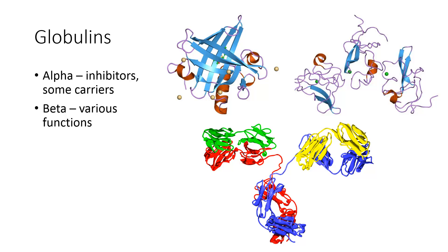The beta globulins are a large family of globulin proteins that carry out various functions. Some examples include plasminogen, which is an enzyme that breaks up blood clots; sex hormone binding globulin, which transports estrogens, progestins, and testosterone — the sex hormones from the gonads are hydrophobic, so they need a protein to carry them through the aqueous medium of the blood. One more example of a beta globulin would be transferrin, which is the protein that carries iron around in your blood.